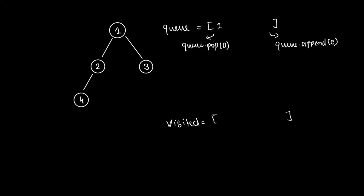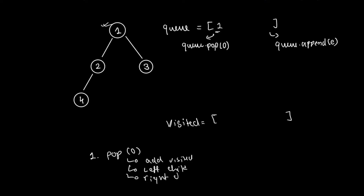I'm going to add node one to our queue. Every iteration, I'm going to repeat three commands: first, pop from the front; then add the popped element to visited; then check the left child and right child — and if a child exists, add it to the queue. That's the entire logic.